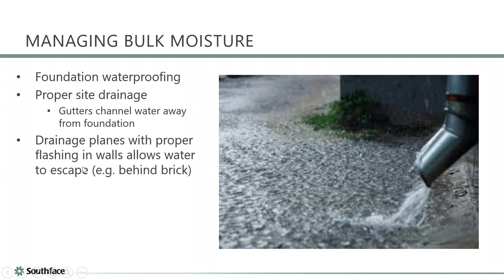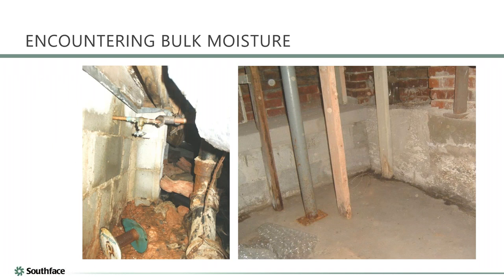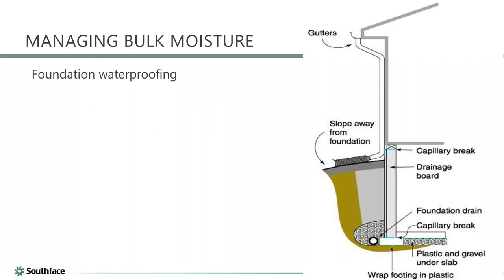Bulk moisture photos from assessments: one shows a plumbing leak — likely a small drip from solder joints — causing a foundation wall to be wet. Another photo shows evidence of past moisture issues even though it's dry now: wicking, mold growth, and rust on the bottom. Just because it's dry when you encounter it doesn't mean the house is problem-free.